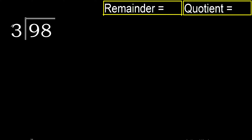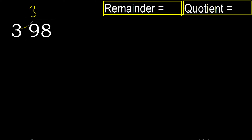98 divided by 3. 9 is not less than 3, therefore with 9: 3 multiplied by 4 is 12, 12 is greater than 9, therefore not 4. 3 multiplied by 3 is 9, 9 minus 9 is 0. 9 is not greater than 9.